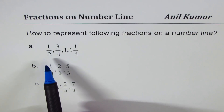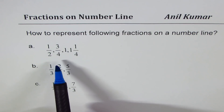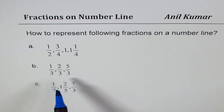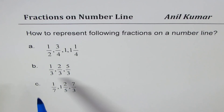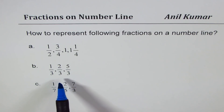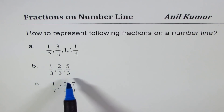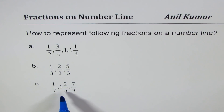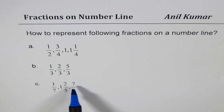The numbers in set A are 1/2, 3/4, and 1 and 1/4. The second set is 1/3, 2/3, and 5/3. And set C is 1/7, 1 whole, 2/5, and 7/3.